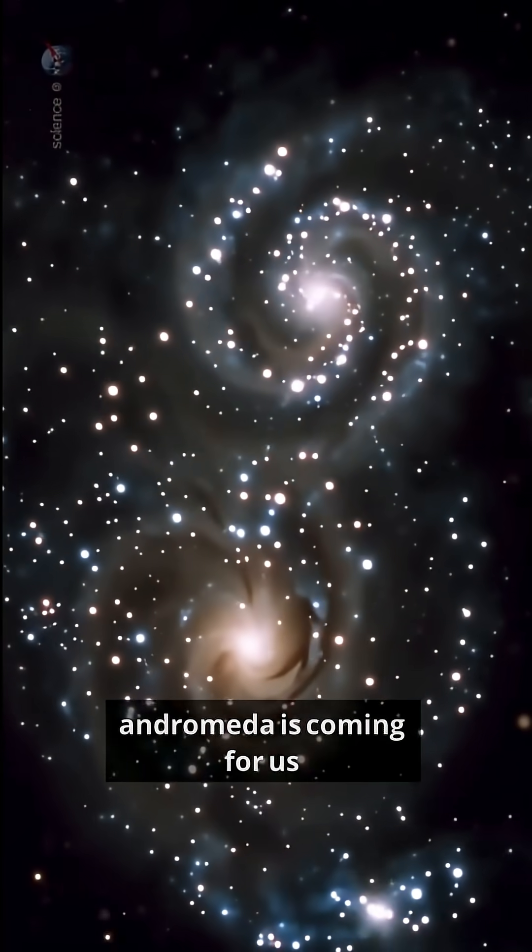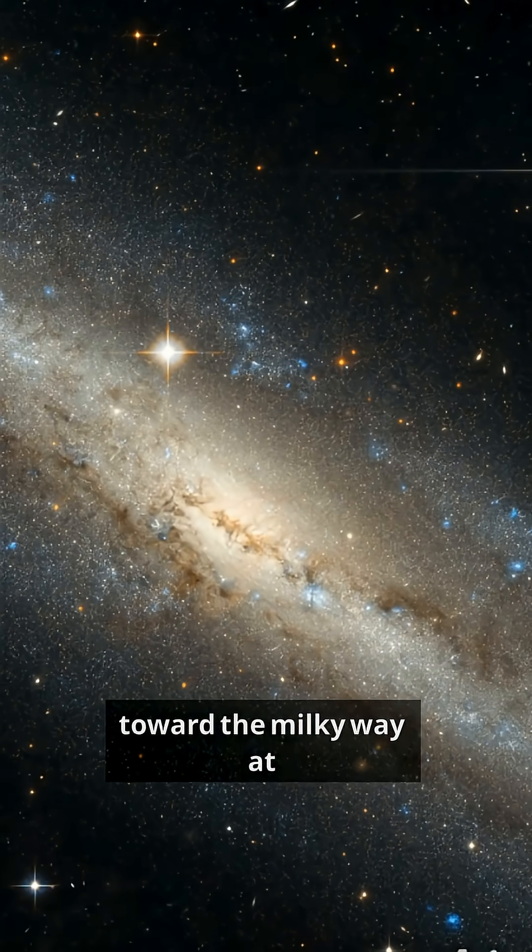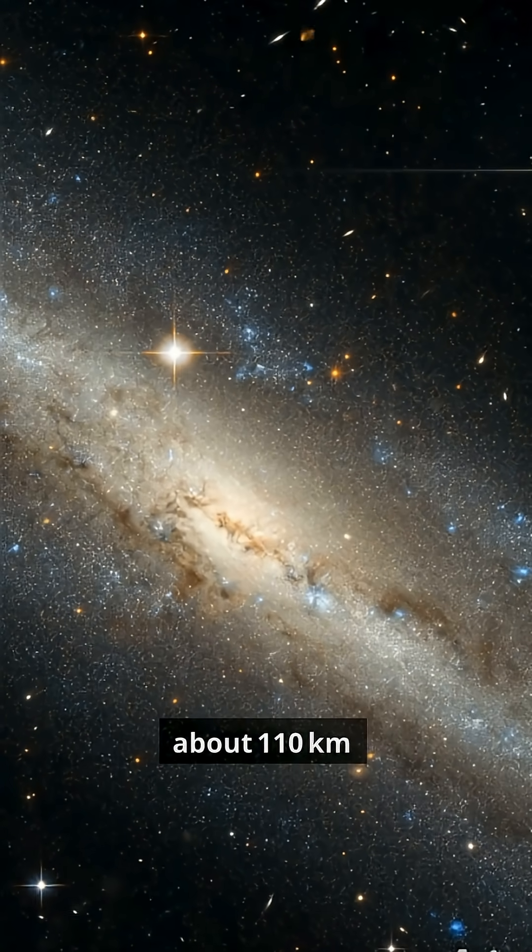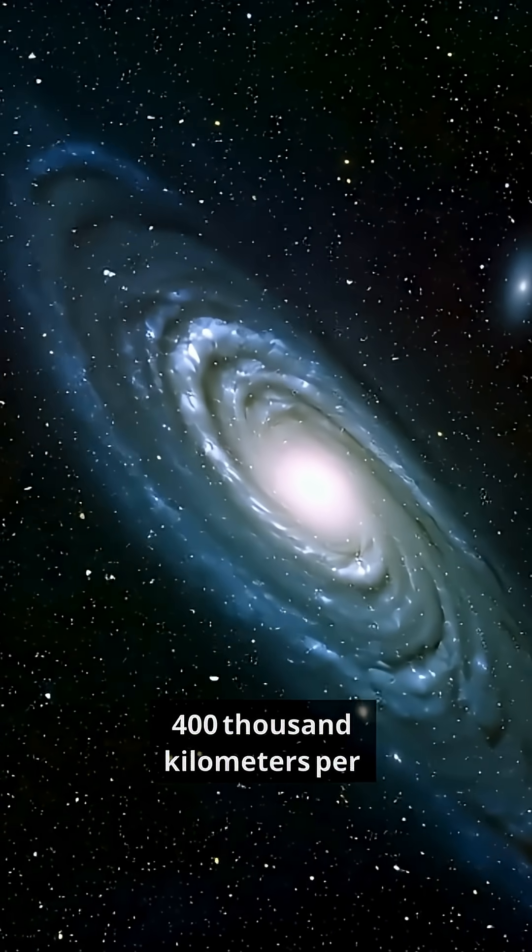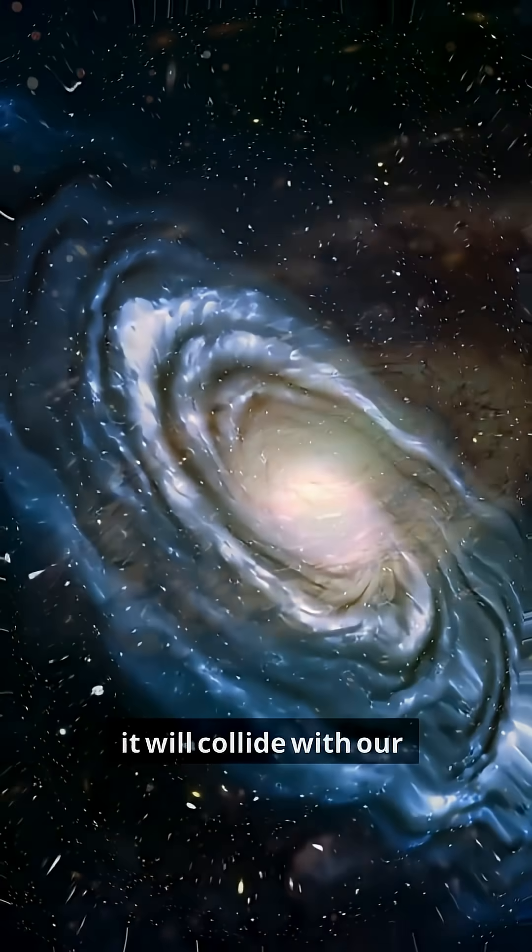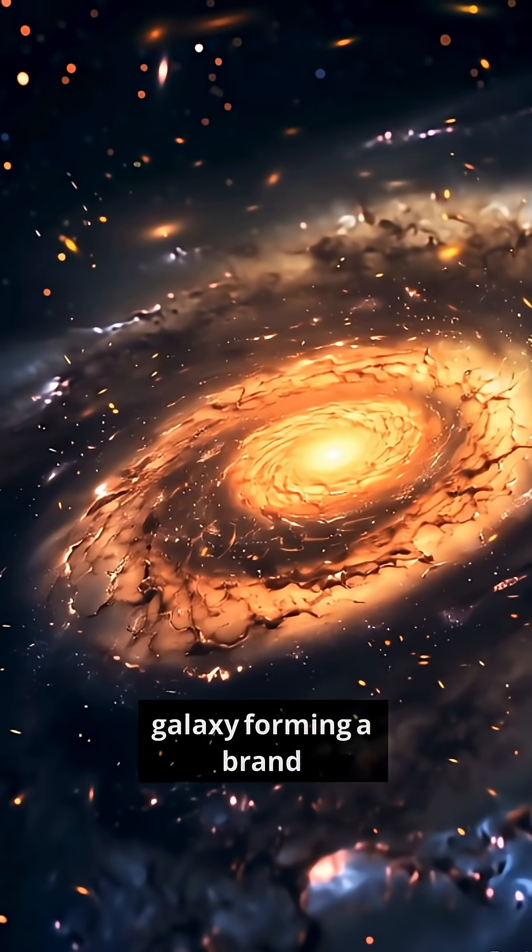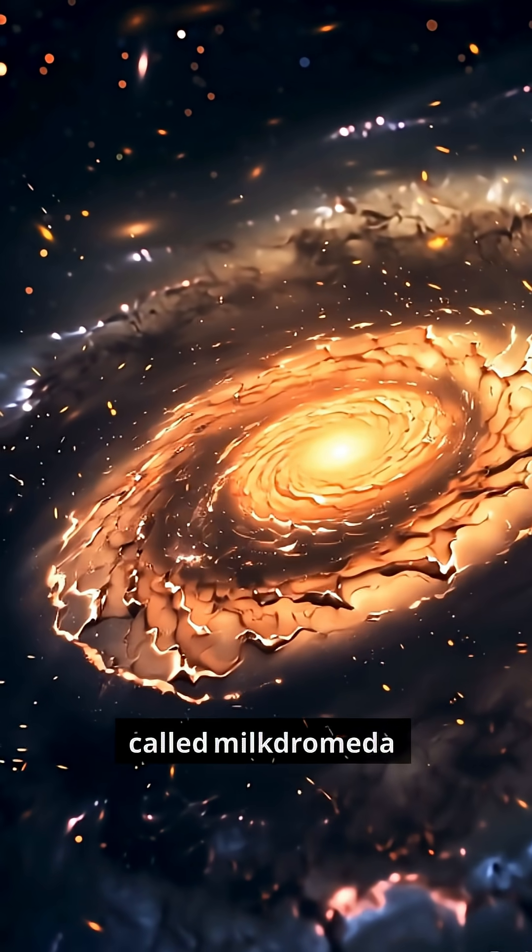Fact number one, Andromeda is coming for us. Andromeda is moving toward the Milky Way at about 110 kilometers per second. That's over 400,000 kilometers per hour. In roughly four to five billion years, it will collide with our galaxy, forming a brand new super galaxy scientists call Milkdromeda. Crazy, right?